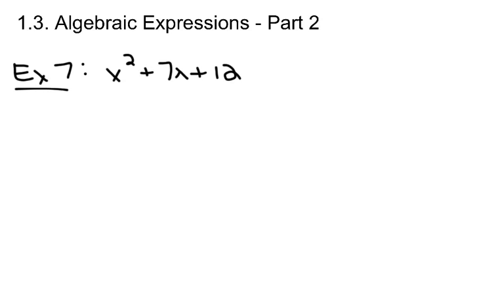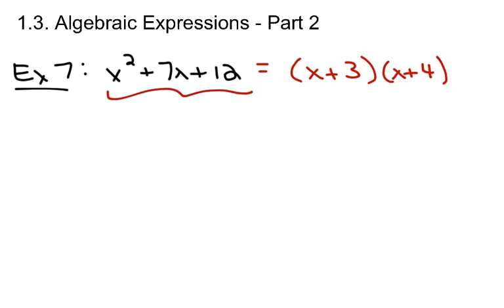I'm going to go back to the problem I talked about in the last video, which was x squared plus 7x plus 12. We found out that in factored form it was x plus 3, x plus 4. But let's say I wanted to use my graphing calculator to help me out. If you graph this in the graphing calculator under y1 equals and then hit graph, you'll notice that the graph hits the x-axis — these are called the zeros — at negative 3 and at negative 4.